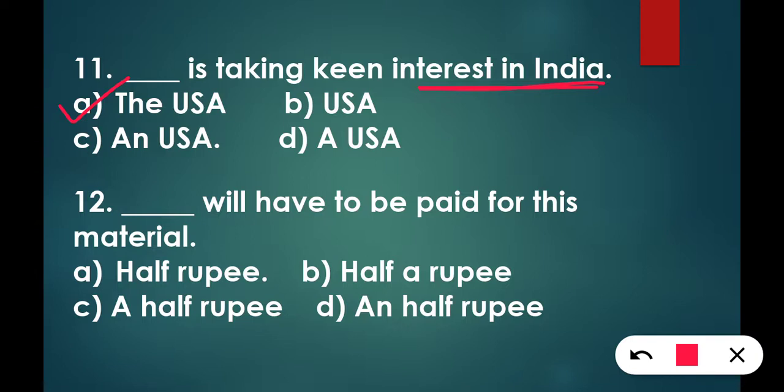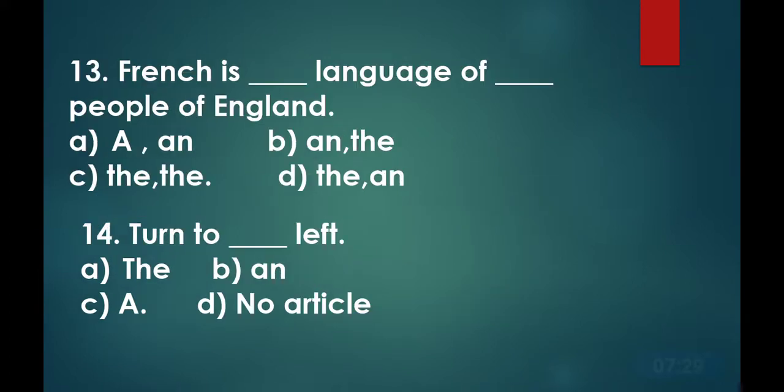Next is question number twelve: ___ will have to be paid for this material. The options are half rupee, half a rupee, a half rupee, or an half rupee. The correct answer is option B: Half a rupee will have to be paid for this material.